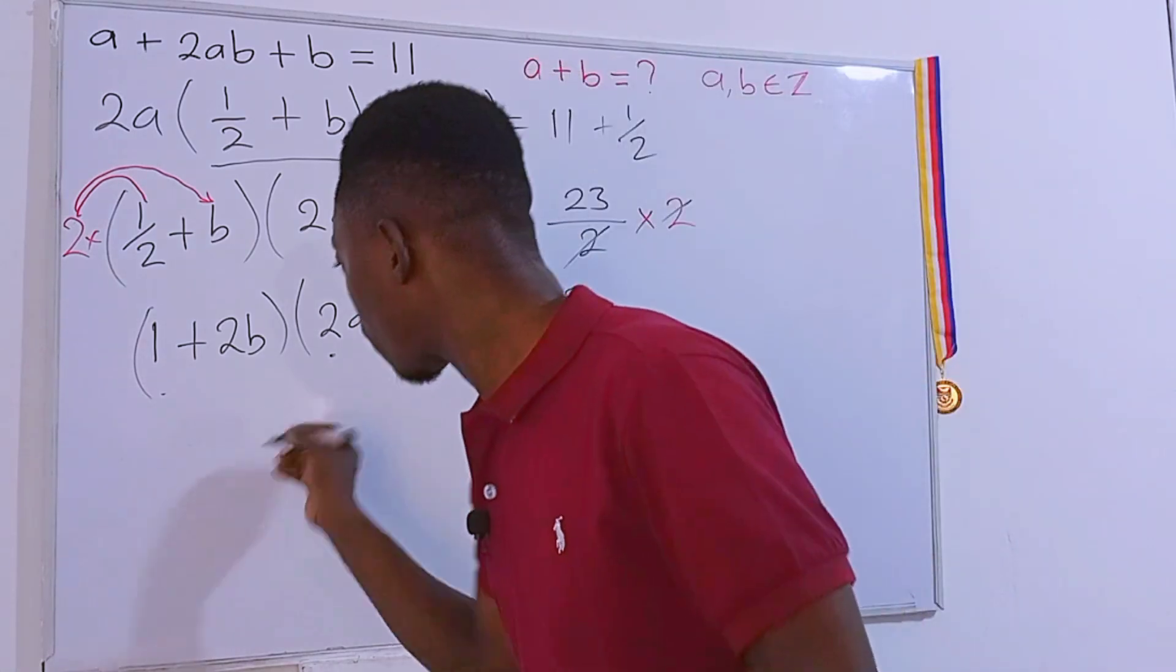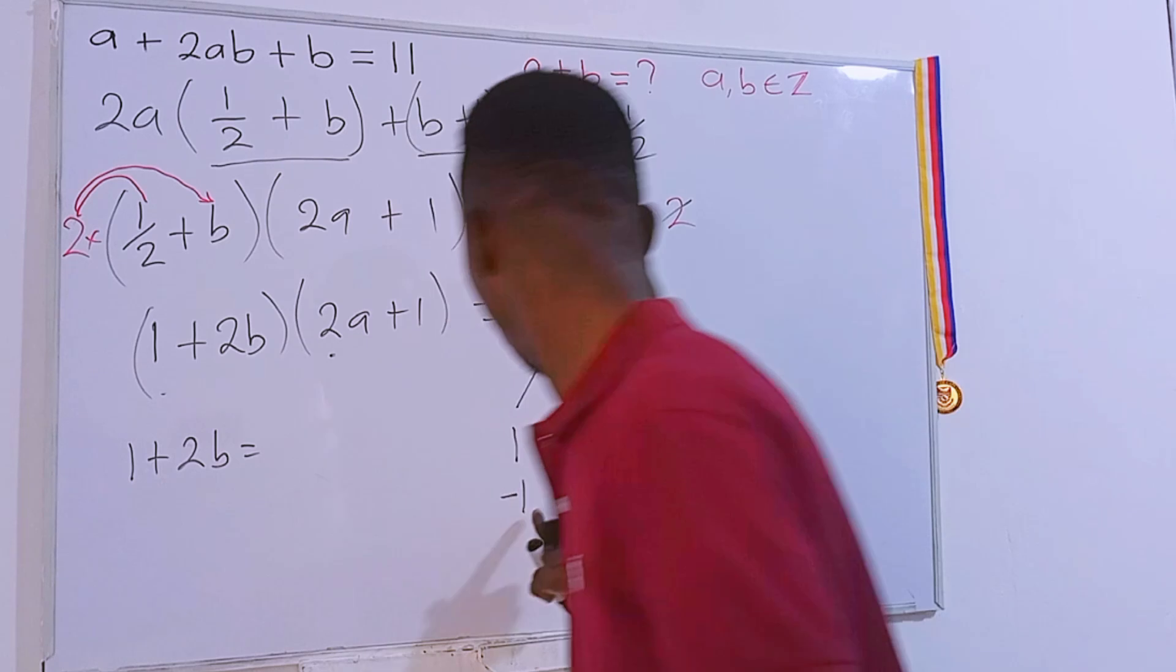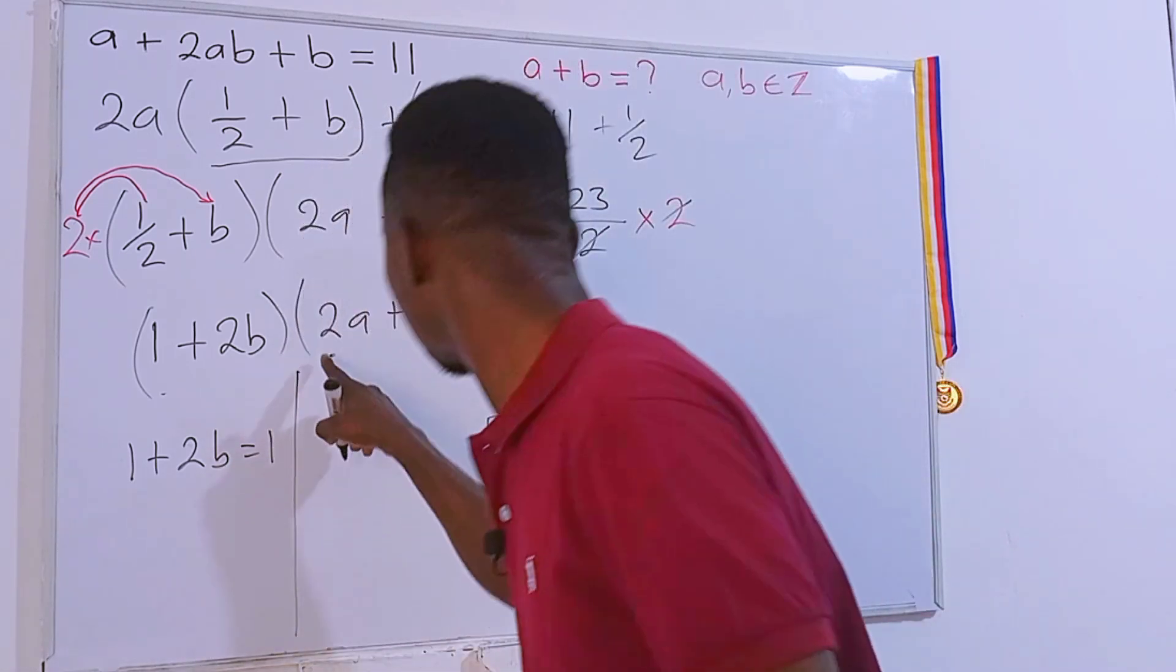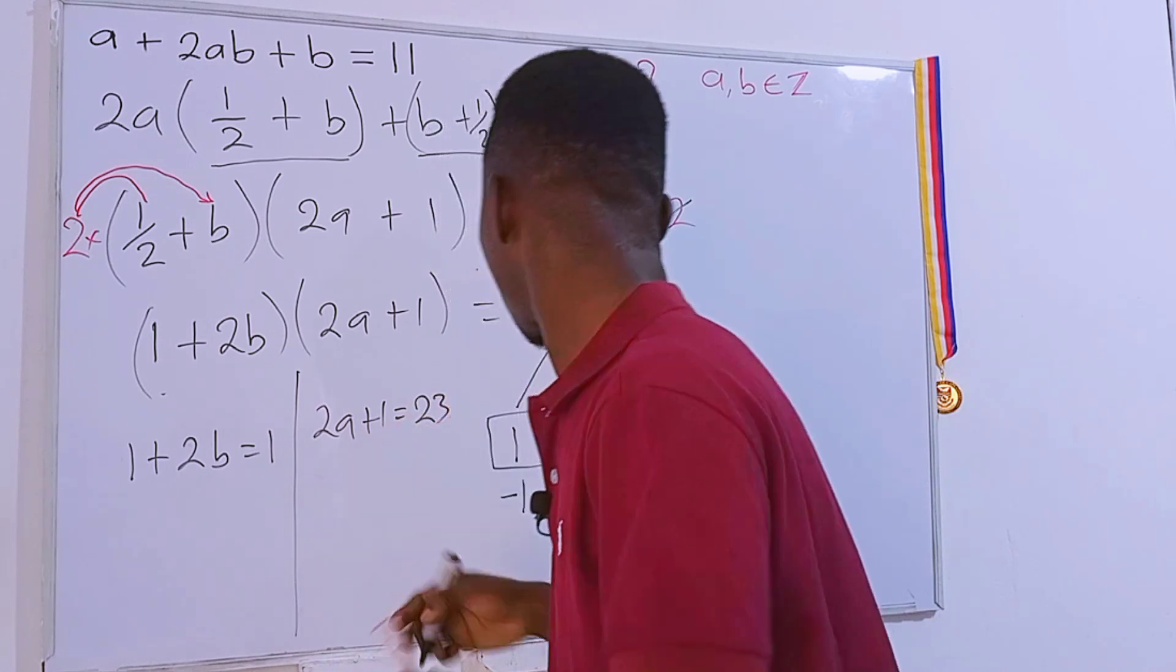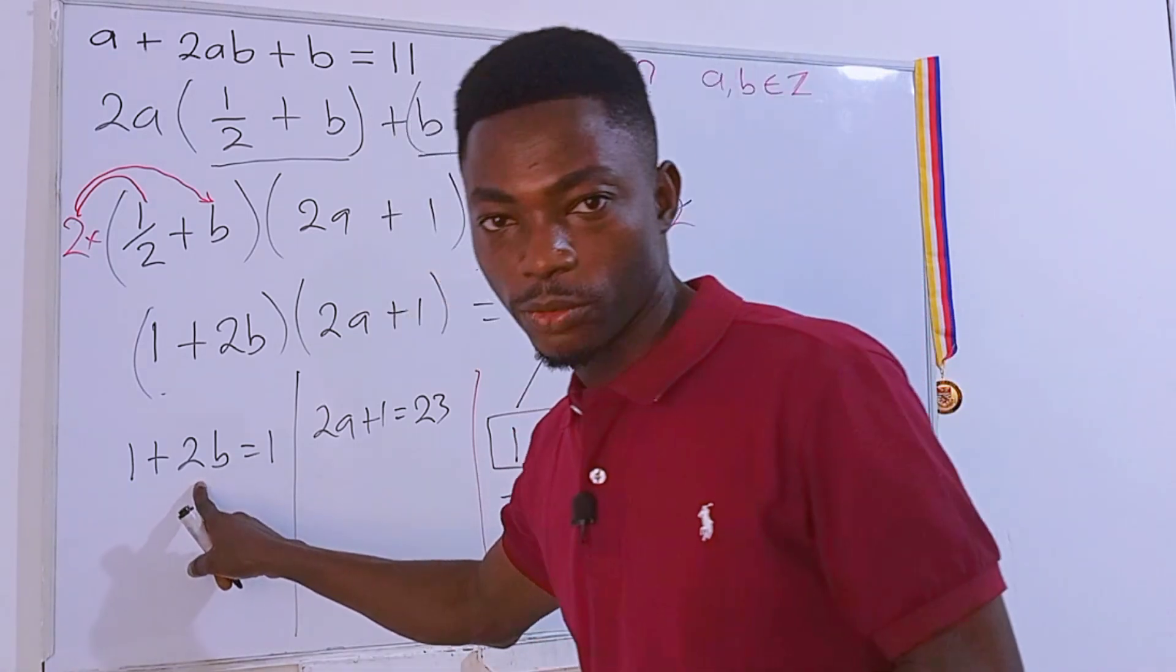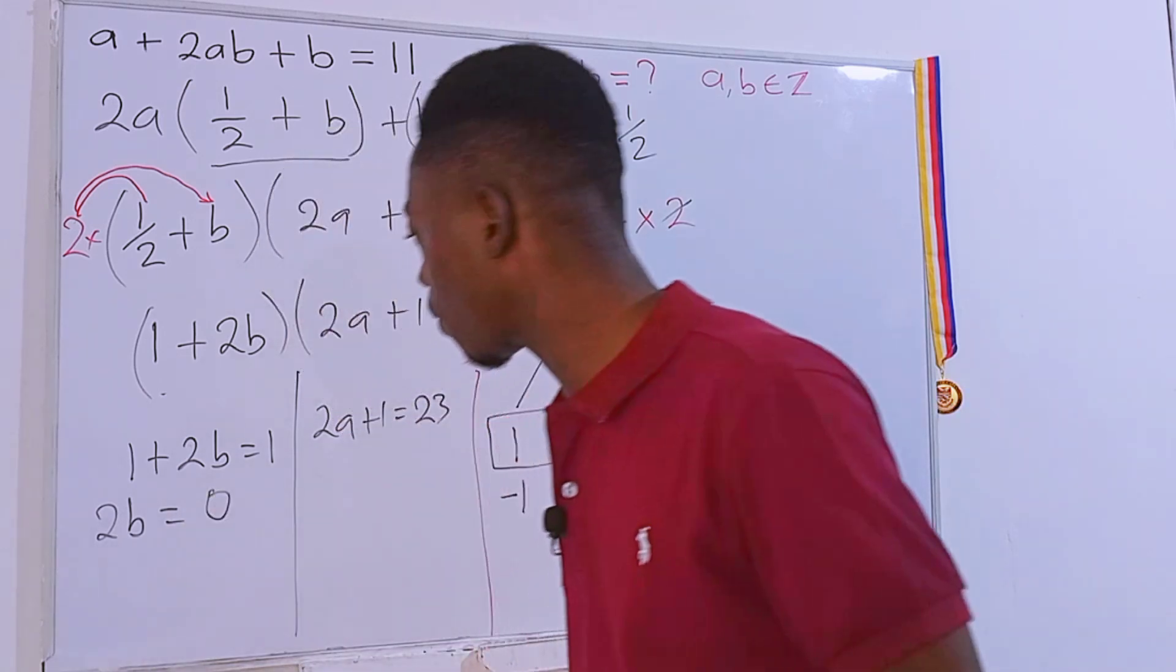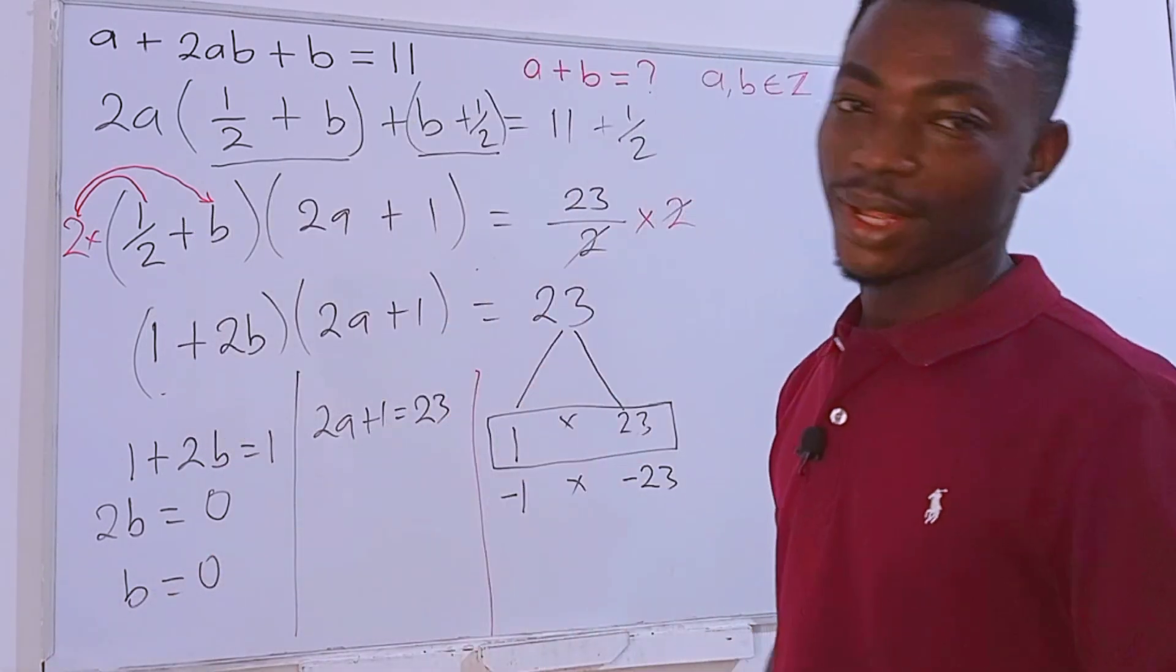The first equation is that 1 + 2b is equal to—let's deal with the positive aspect first—is equal to 1. Then the second equation will be 2a + 1 = 23. Let's solve for b from this equation. We have 2b = 0 if we transpose this one. And dividing this side of the equation by 2, we have b = 0.